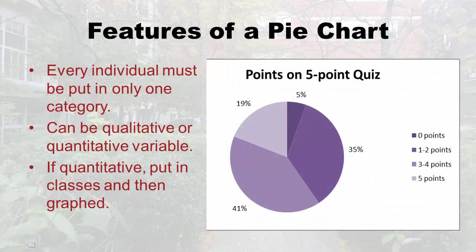Let's look at the features of a pie chart. I made up a fake example — I had a class take a five-point quiz. I wanted to show how to do it with a quantitative variable, since the nursing survey was qualitative. I put students' points into classes: zero points, one to two points, three to four points, and five points. Regardless of whether you're doing qualitative yes/no categories or quantitative classes, every individual in your data must be in only one category — everybody gets one vote. That's really important in a pie chart.